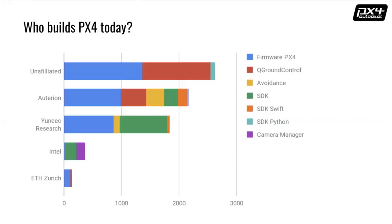A great success story is Yuneec Research, the R&D division of Yuneec, a consumer and commercial drone manufacturer. You can also see that Intel contributed, and number five is ETH Zurich. The companies identified by name are members of the industry association DroneCode, so the top three member organizations are on this chart. Overall, really healthy and distributed, but at the same time we have companies with real commitment to the ecosystem.